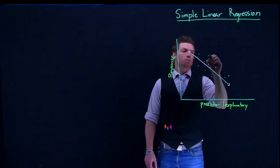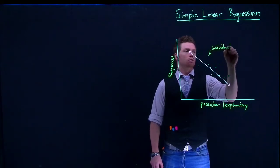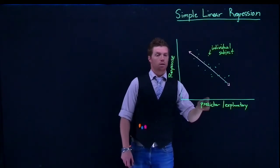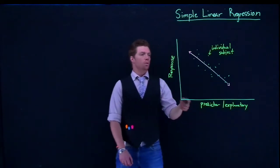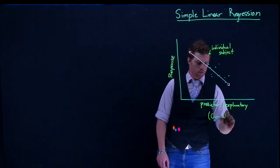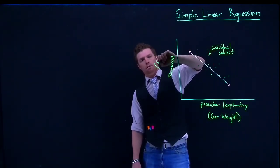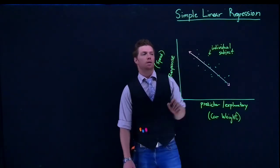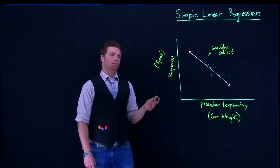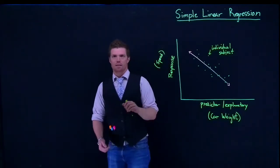Every one of these points represents an individual subject where we have both measured the predicting variable and the response variable. For example, we could use car weight and the top speed of the car — how fast can the car go based upon how much weight it has. This would be a negative relationship: as the weight increases, the speed decreases.